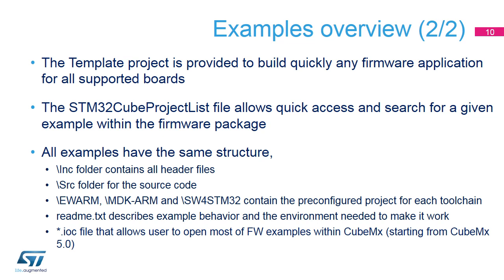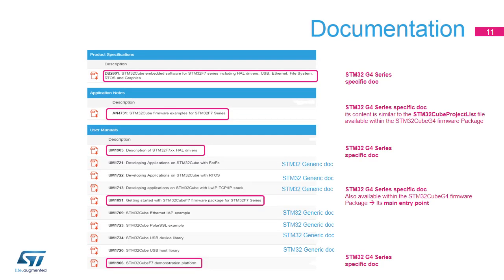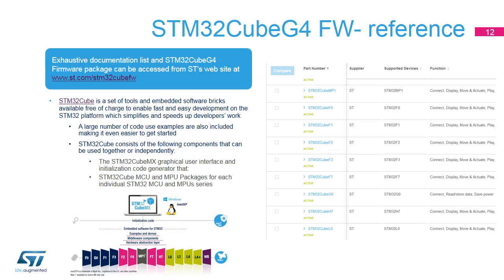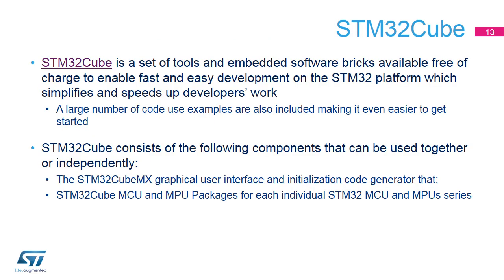A README text file describes the example behavior and the environment needed to make it work. Note that most examples include a .ioc file enabling configuration of the firmware from the CubeMX tool. Rich documentation is associated with the STM32CubeG4 firmware package — some documents are generic to all STM32 series, others specific to the STM32G4. The Getting Started with the STM32CubeG4 Firmware Package user manual is the document to read first. The firmware can be downloaded from the ST website at www.st.com/stm32cubeFW.